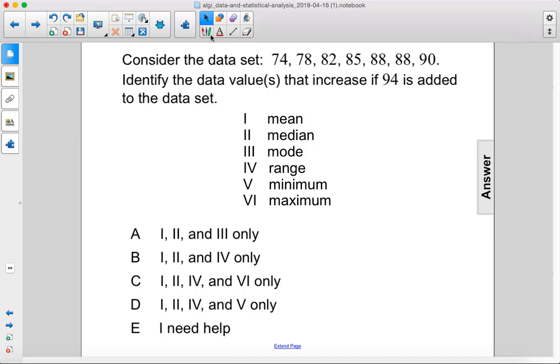Consider the data set. Identify the data values that increase if 94 is added to the data set. So we add 94 here. Let's see what changes.